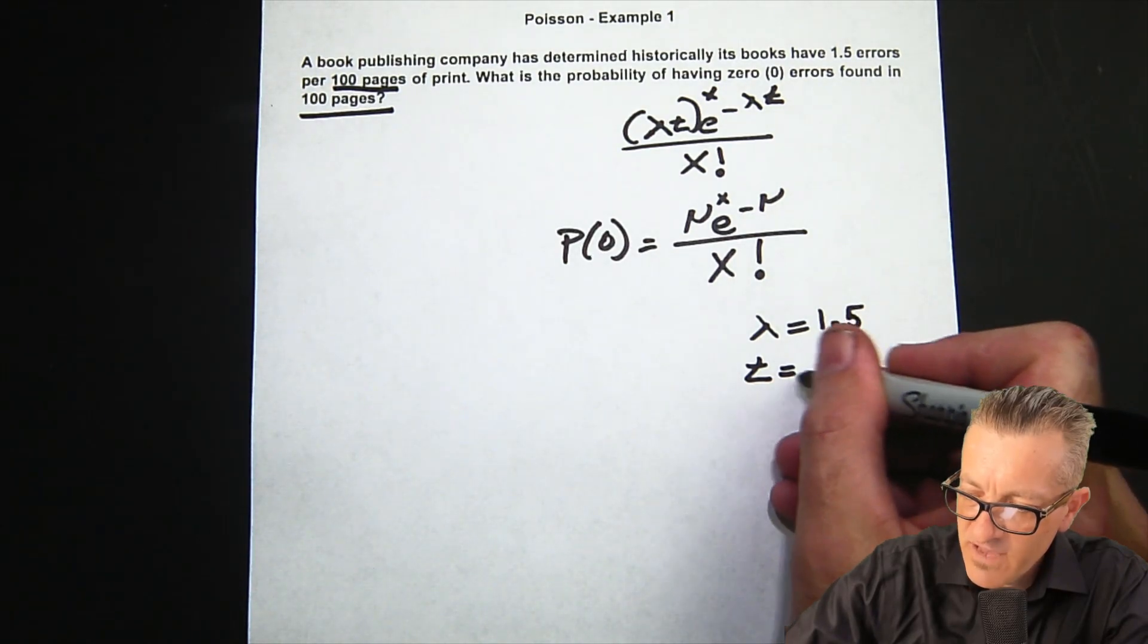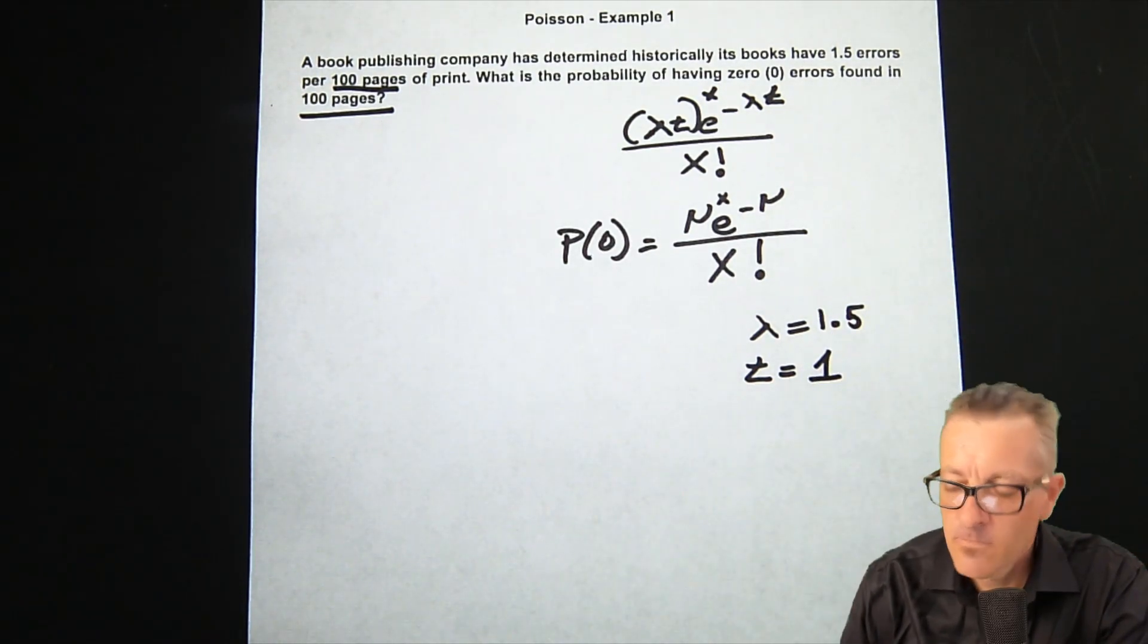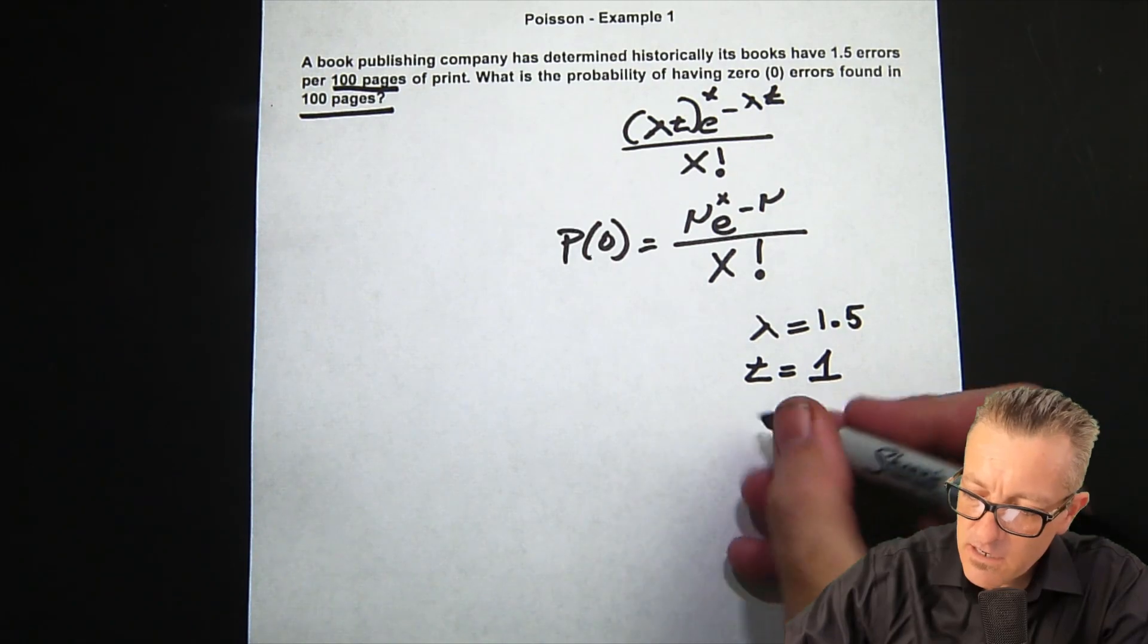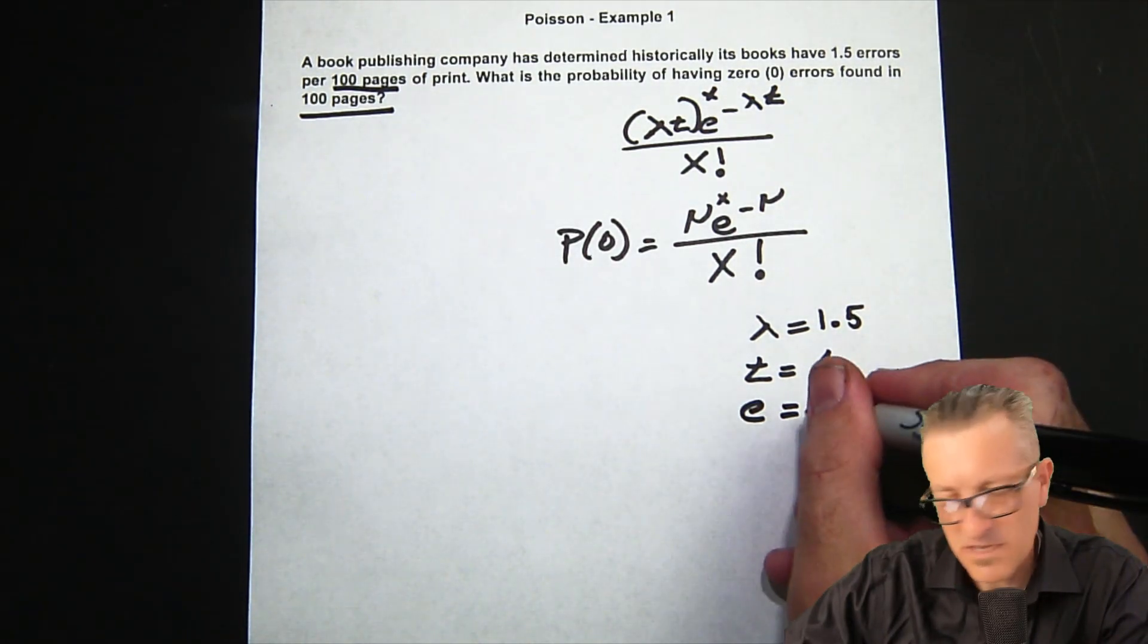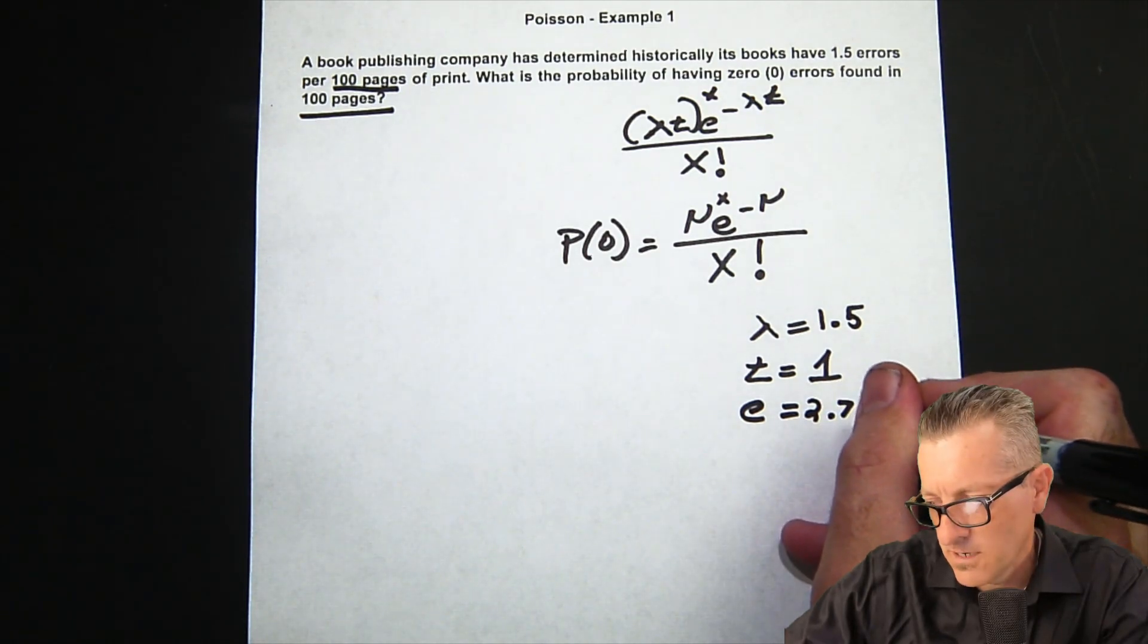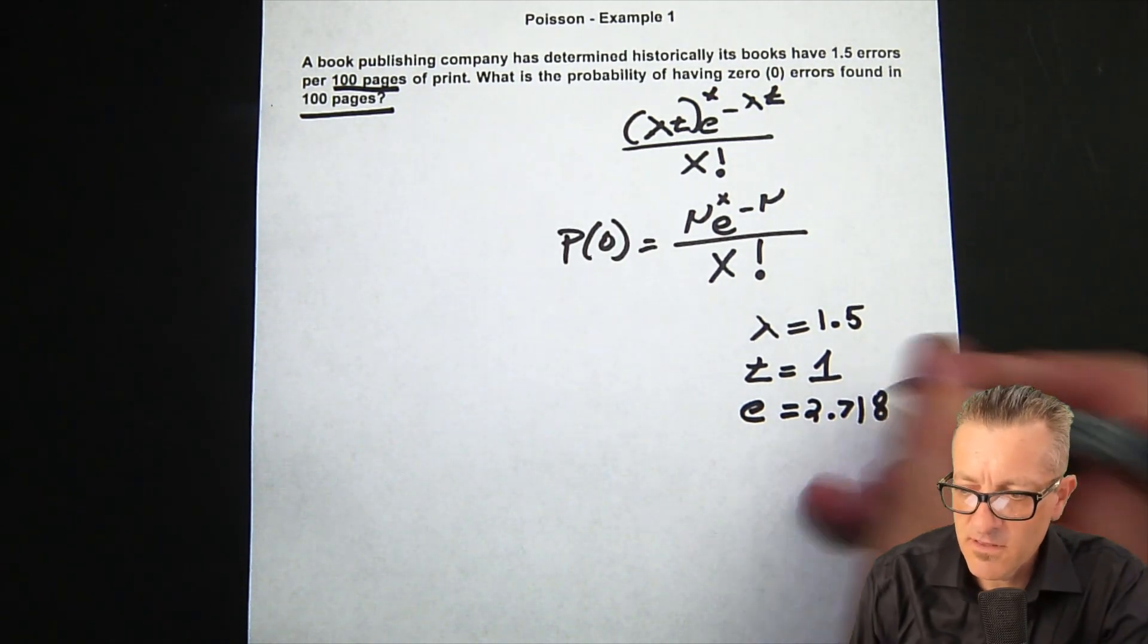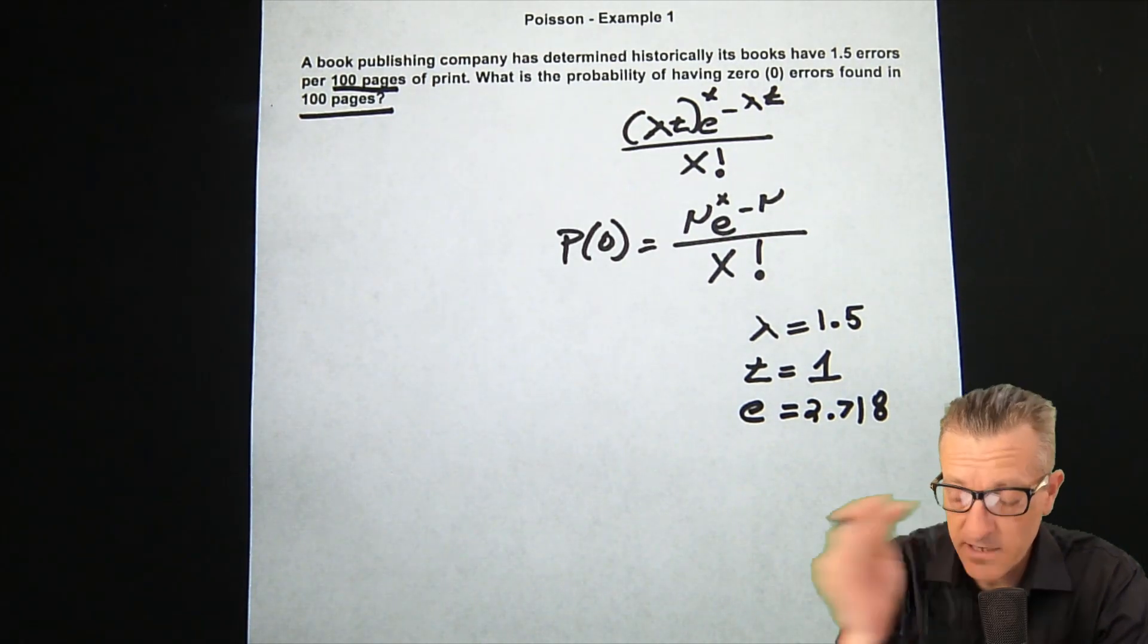Then our e that I was talking about, the natural log, is 2.718. I never memorize it because I just use the key in the calculator, which I'll explain.